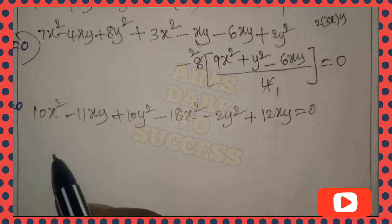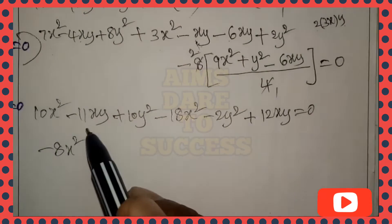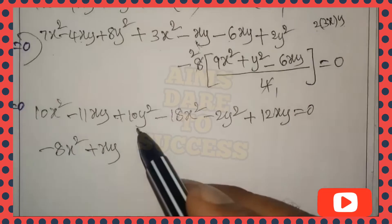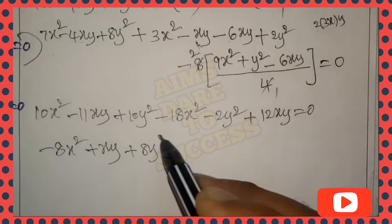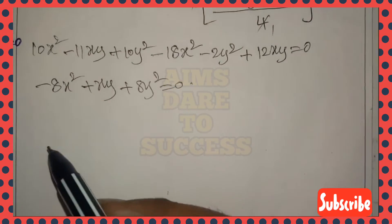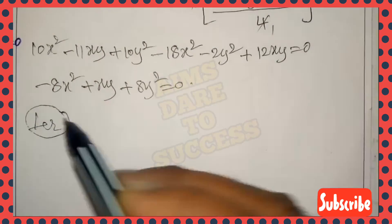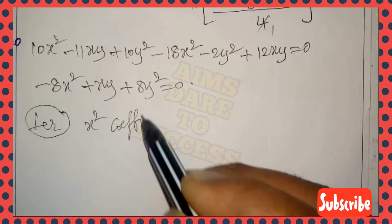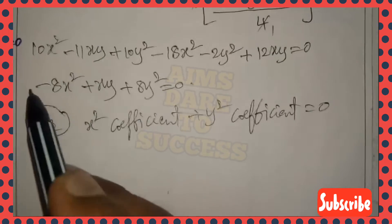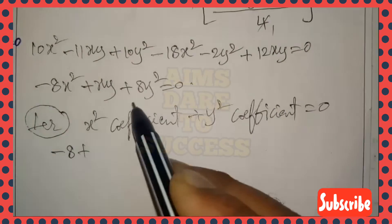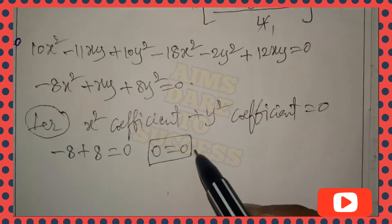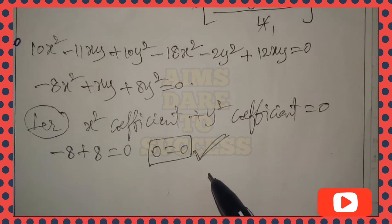So the final equation is: -8x²+xy+8y²=0. According to the question they are mutually perpendicular, i.e., coefficient of x² + coefficient of y² = 0. Coefficient of x² is -8, coefficient of y² is +8: -8+8=0. Hence 0=0, which proves the lines are mutually perpendicular. Please subscribe to our channel, support us, and share with your friends.